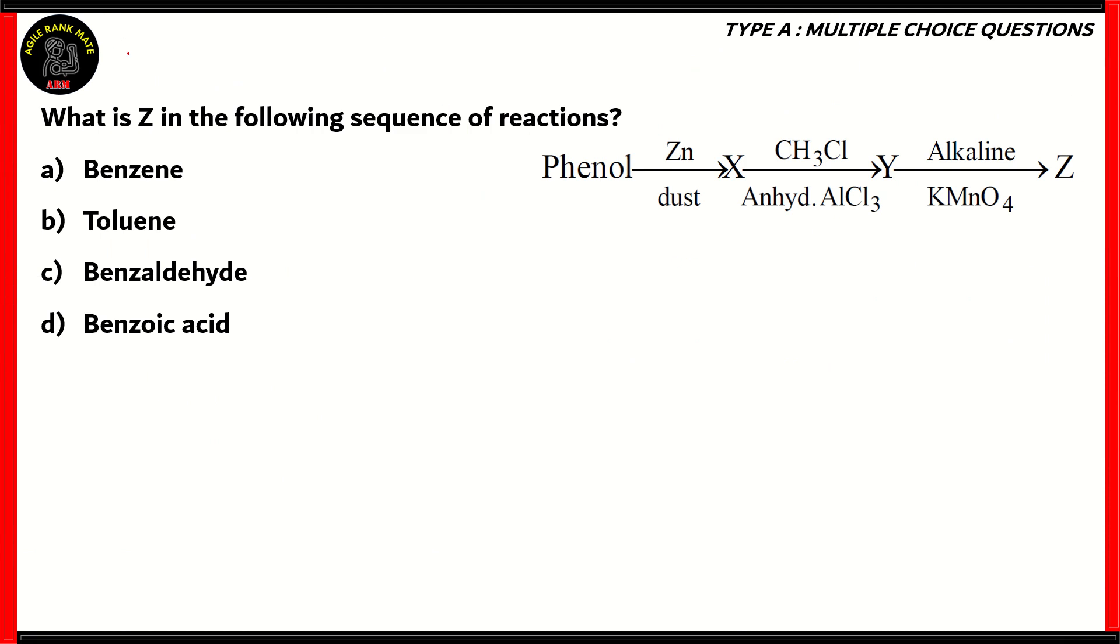Now let's look at another question. What is Z in the following sequence of reactions? This pertains to organic chemistry. We have phenol going through a series of reactions to form a final product Z, and we need to find out what that final product is. In order to solve that, you'll have to start from the beginning.